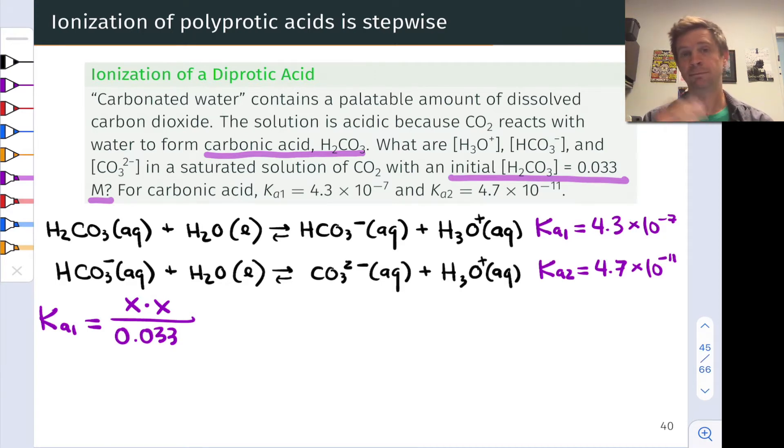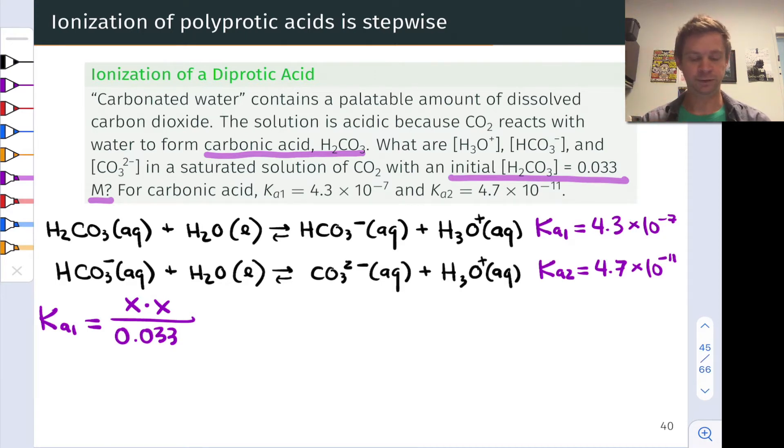We're going to call that concentration of those species produced X. And so in the numerator of the reaction quotient, we have X times X at equilibrium. And in the denominator, we would have that 0.033 initial molarity minus X. But we can assume X is small here because of the small Ka1 value. Very, very tiny with respect to 0.033. So we can say that the denominator at equilibrium will essentially be equal to 0.033.